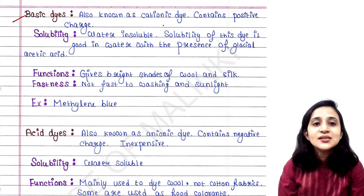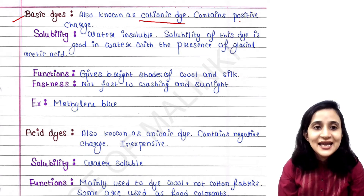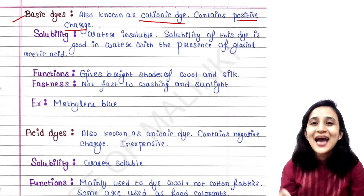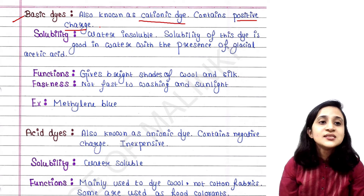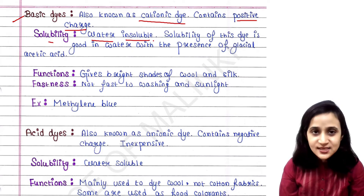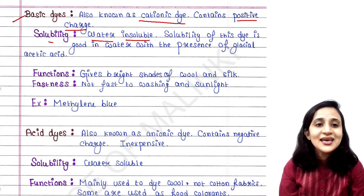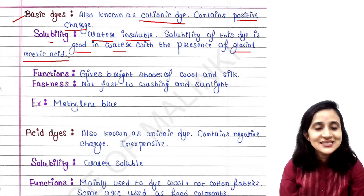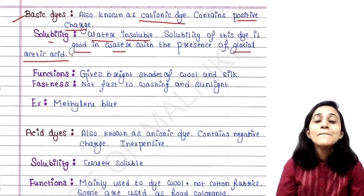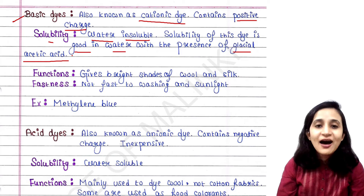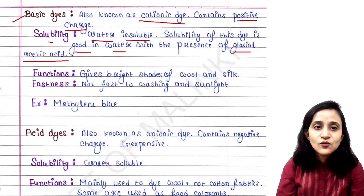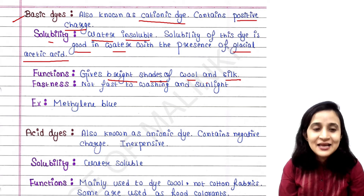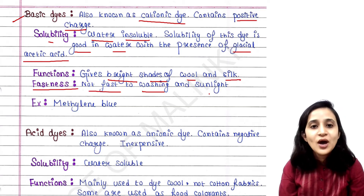Next is basic dye, also known as cationic dye. It contains a positive charge. Its solubility is water insoluble on its own, but it becomes soluble in water with the presence of glacial acetic acid. It gives bright shades to wool and silk. Fastness is not fast to washing and sunlight.